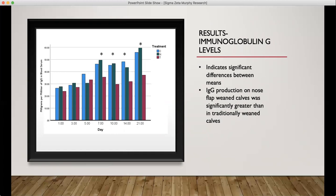We really are not observing much variation of IgG production in the traditionally weaned calves. Days one through five, none of the means were different and the average IgG in blood serum are the same. However, on day seven to 21, the means are significantly different at a P is less than 0.001 significance between nose flap and traditional groups.